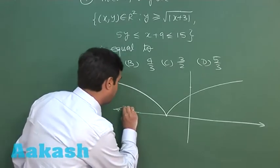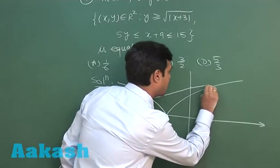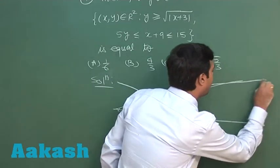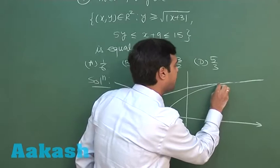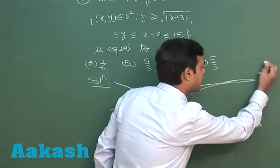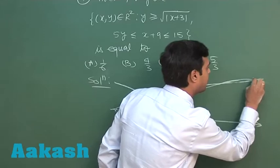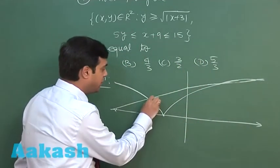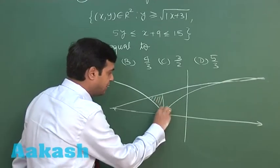Now joining the two, it will be intersecting the parabola like this and will move again. So the required portion would be this one.